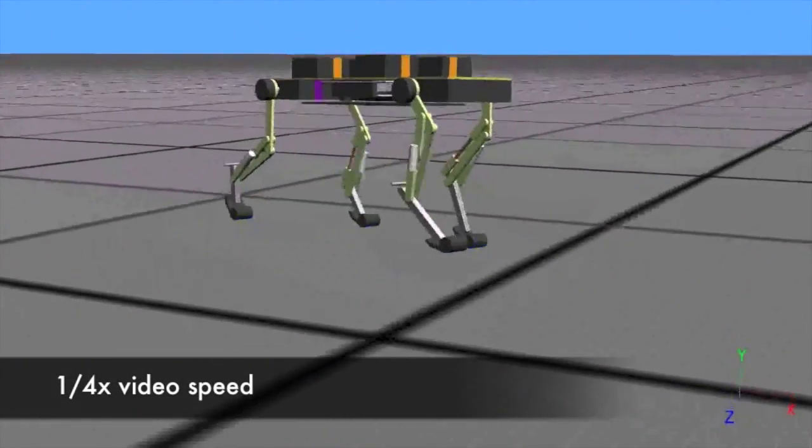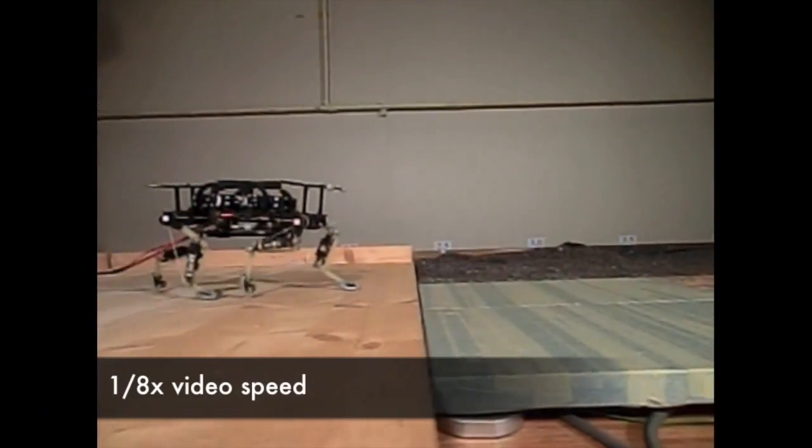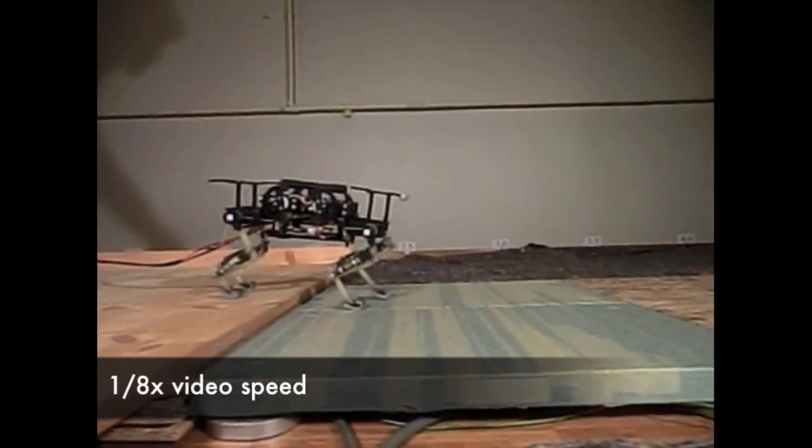Besides this very fast speed, it's also very robust. So we can have the robot running over step-down obstacles of up to 20% of its leg length.